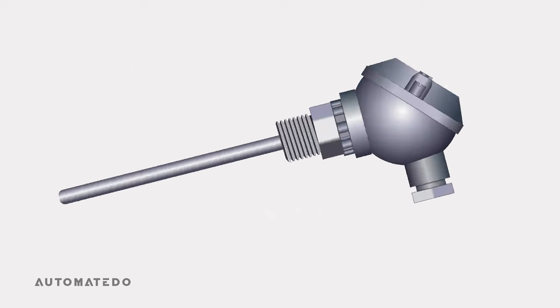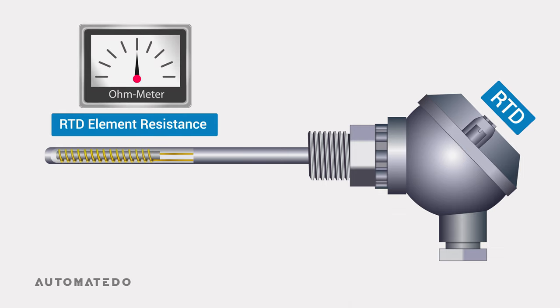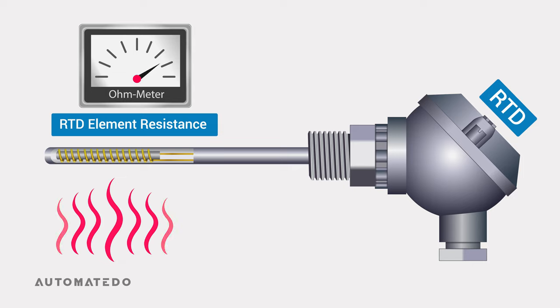An RTD is a passive sensing device that uses a resistive element whose resistance is a function of temperature. It operates on the principle that as temperature increases, the resistance of the RTD increases as well, and vice versa. This happens due to the physical characteristics of the material used to build the RTD element.